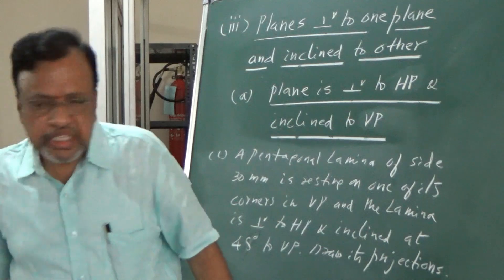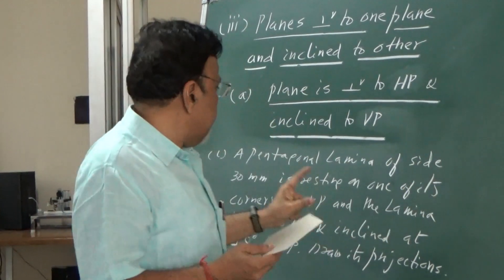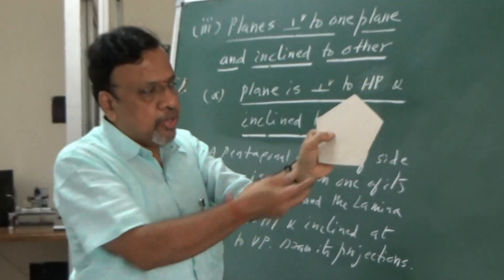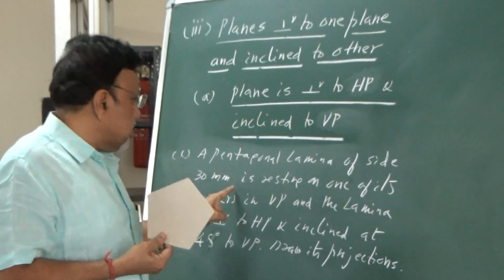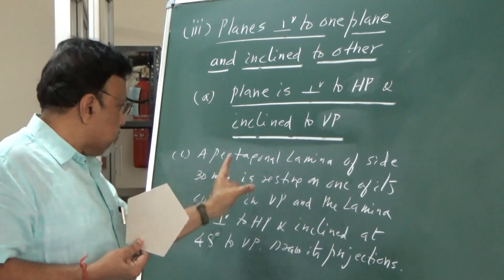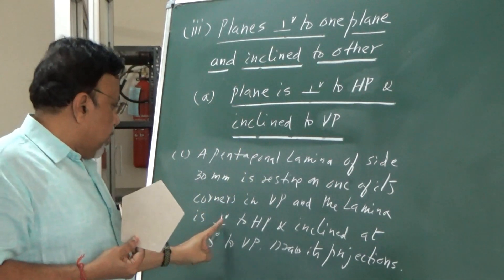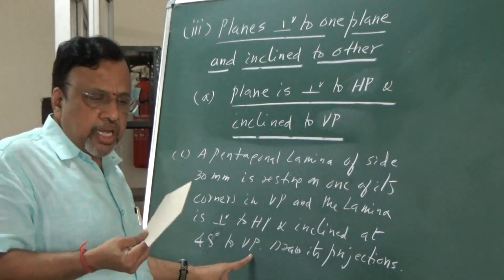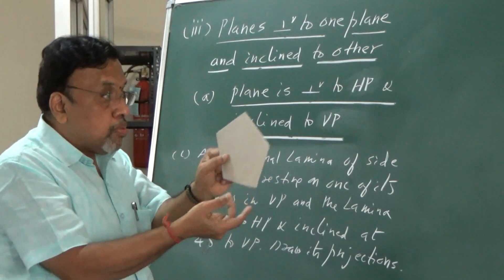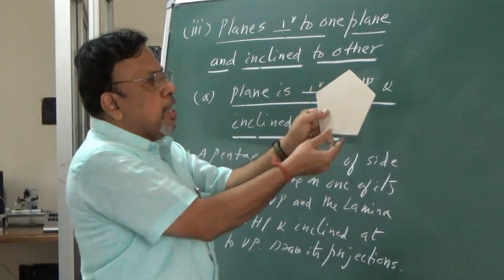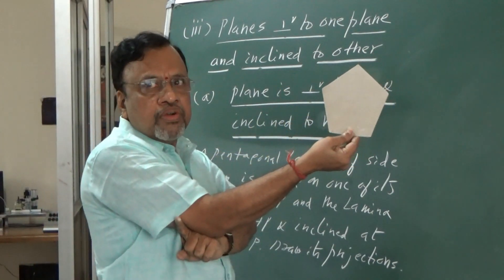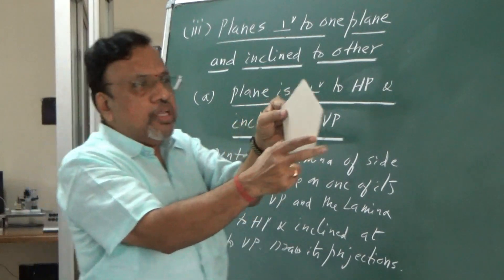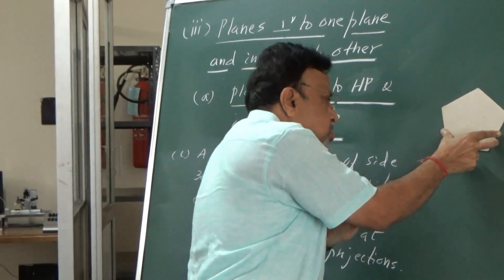I am going to demonstrate this and then solve it. I have taken a pentagon lamina. It is perpendicular to HP and inclined to VP. Since it is inclined to VP, this lamina should be parallel to VP in the initial position. Since it is parallel to VP, I need to keep it in this way, and since I want one of the corners to be on VP itself, I will say this lamina is resting on VP.